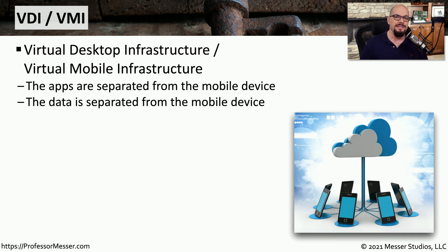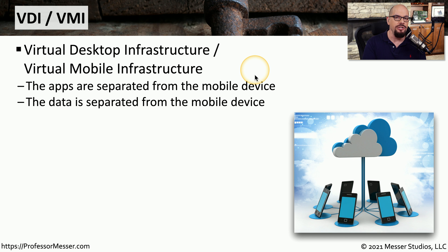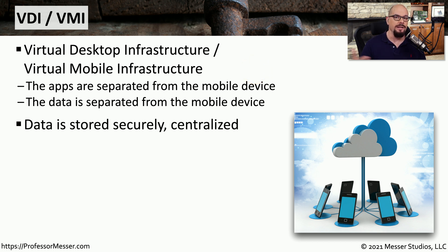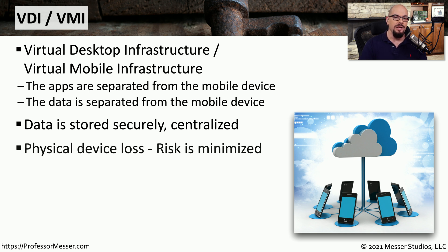Another mobile deployment type separates the data from the device — this would be VDI or VMI, which stands for Virtual Desktop Infrastructure or Virtual Mobile Infrastructure. With VDI and VMI, you can separate both your applications and data from the mobile device and have all of that information stored somewhere else. This keeps all data and apps stored external from your mobile device, and you would access those applications and data using remote access software. This means your data is stored securely and separately, so if you lose your mobile device, you're not losing any of that data.